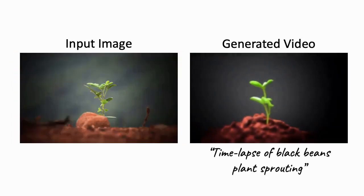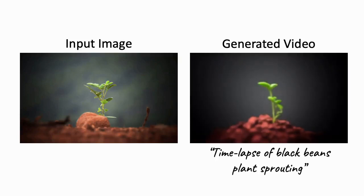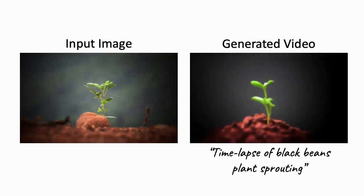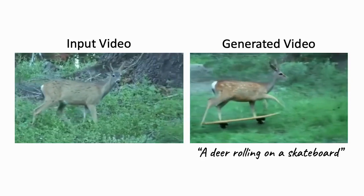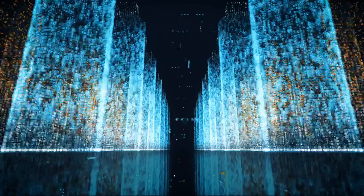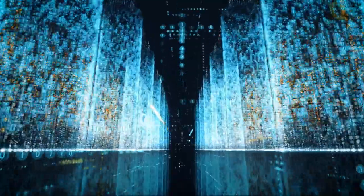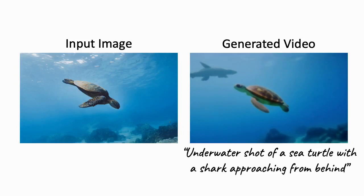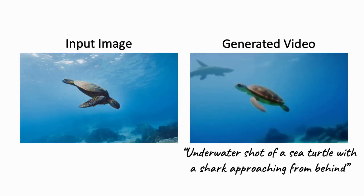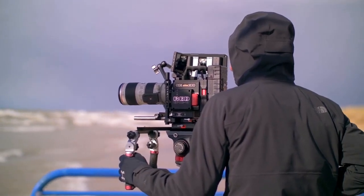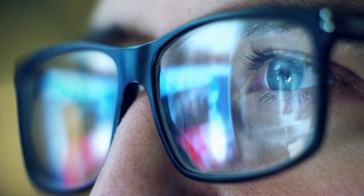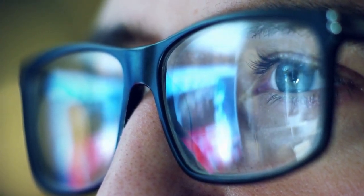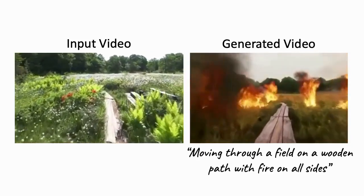Dreamix can even turn a static image of a little plant into a video timelapse of a plant growing, complete with realistic light. This brings deep fakes to a whole new level. These examples showcase the incredible potential of Dreamix for content creators and filmmakers alike. Dreamix can turn static images into breathtaking videos with just a simple text prompt. So whether you're an aspiring filmmaker or a seasoned content creator, Dreamix is a game-changer that can bring your visions to life with ease and efficiency.